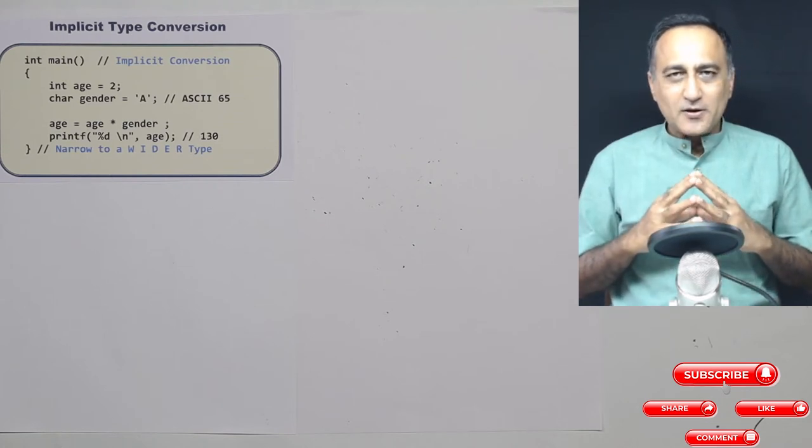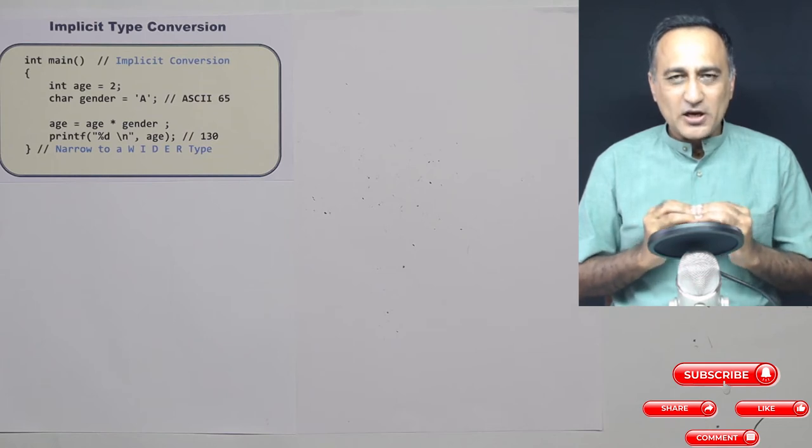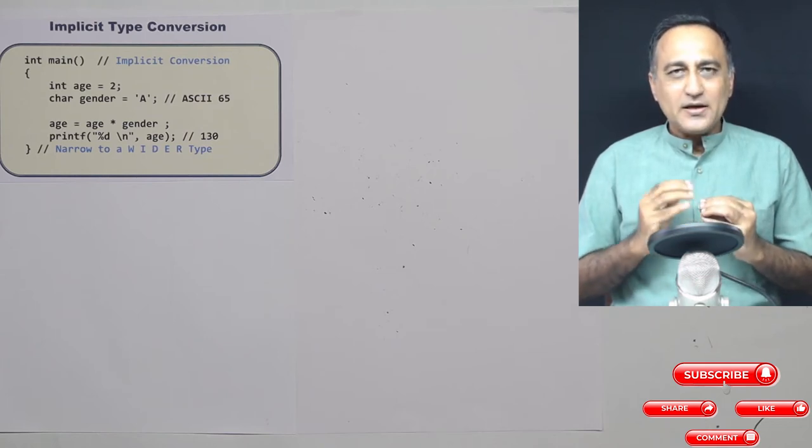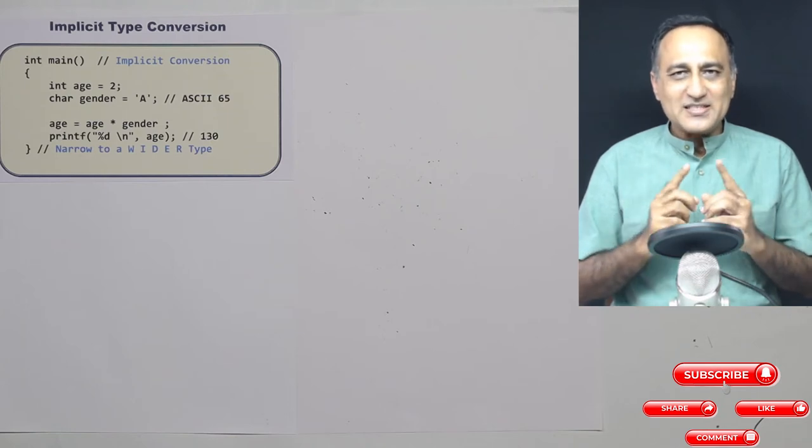So if you look here, the hierarchy or the level of int is lesser than float. That is int i has a level which is lesser than float j. So what it does is it promotes i to float automatically and then does the multiplication.